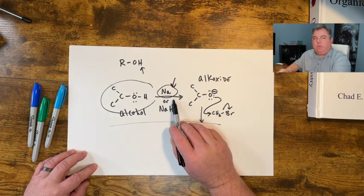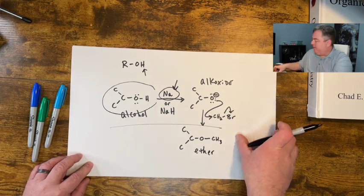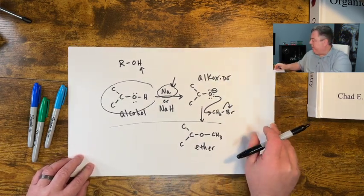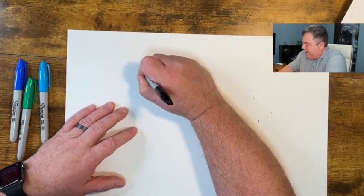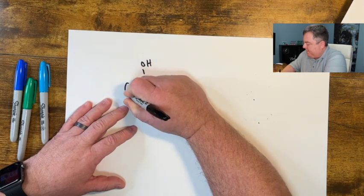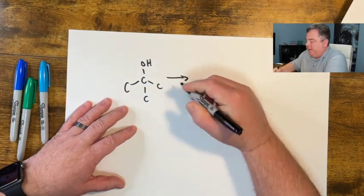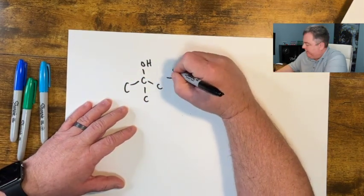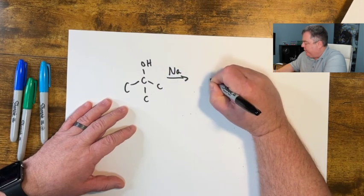So we can make alkoxides from alcohols using sodium metal. This deprotonation takes a really strong base usually. Let's look at one other example. We can compare most alcohols and trying to pull off that proton is very difficult. We know we can do it with sodium.